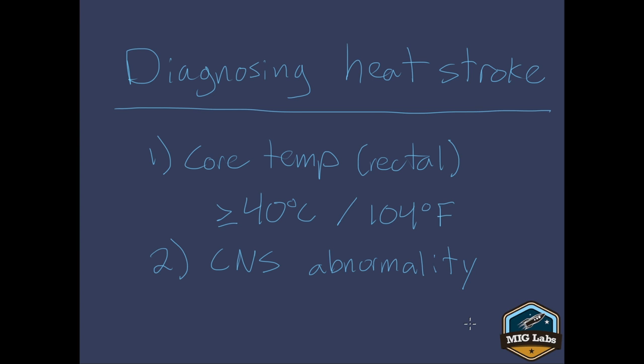Those are our two real hallmarks for diagnosing heat stroke. Just because a patient has a core temperature that's high but they don't have CNS abnormality yet, technically they don't have heat stroke per these standards, but that doesn't mean you shouldn't be worried. If their core temperature is that high, they are at a very serious risk for developing heat stroke. It might only be a matter of minutes before they progress to full-blown heat stroke with altered mental state, seizures, or coma. Don't get trapped into thinking you shouldn't be worried just because they have one and not the other.